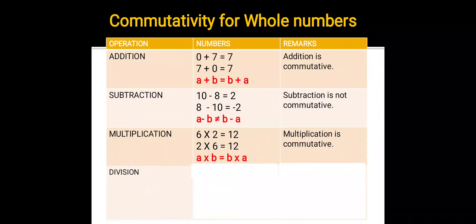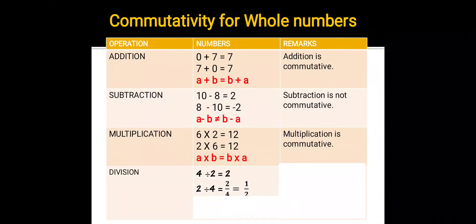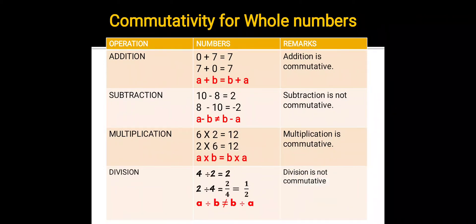Now let's check for division. 4 divided by 2 equals 2. 2 divided by 4 can be written as 2 upon 4. After reducing, we will have the answer as 1 upon 2. So we see when the order of the numbers was changed, the answer also changed. Therefore, a divided by b will not be equal to b divided by a for whole numbers. Therefore, division is not commutative.